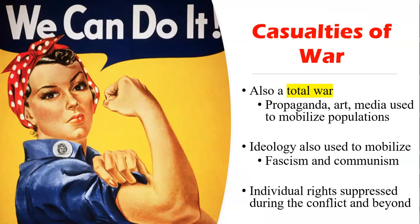Just like World War I, this was a total war — propaganda, art, media, mobilized populations, everyone taking part in the war effort. This, of course, includes Rosie the Riveter. Ideology — fascism, communism — was used to mobilize people everywhere, and individual rights were suppressed during the conflict. Something important to discuss is the Japanese internment camps in America — you'll cover this a lot in American history. There were internment camps in Arkansas: Japanese people were rounded up and shipped there, taken away from their homes, losing everything. They were shipped overnight, essentially told to leave their homes and take only what they could carry.